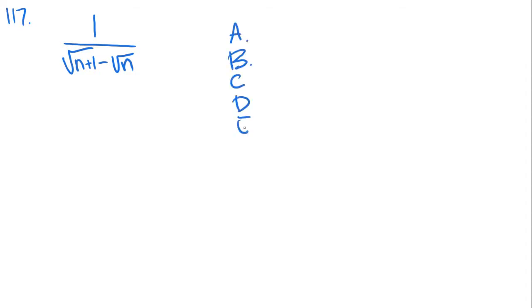A is just 1, B is the square root of 2n plus 1, C is square root of n plus 1 over square root of n, D is the square root of n plus 1 minus the square root of n, and finally, E is the square root of n plus 1 plus the square root of n.